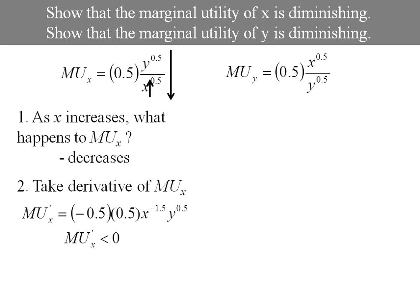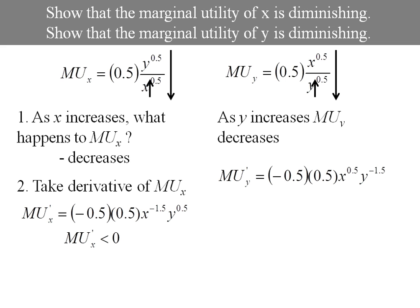As y increases the marginal utility of y decreases. I could instead take the derivative of marginal utility. I get negative 0.5 times 0.5 x to the 0.5 y to the negative 1.5. That negative out in front tells me my marginal utility derivative is negative.